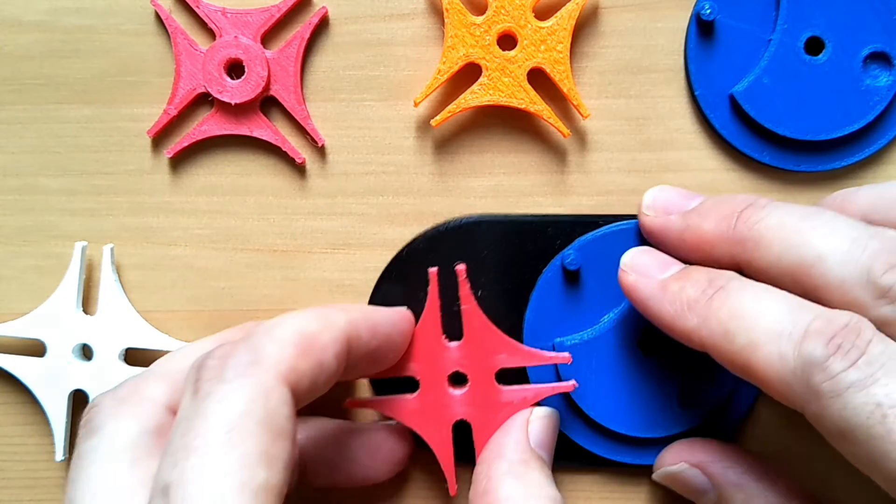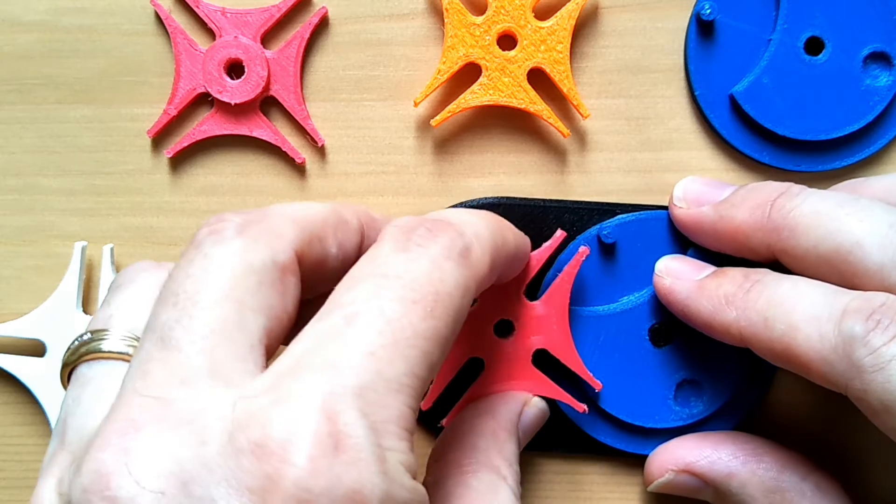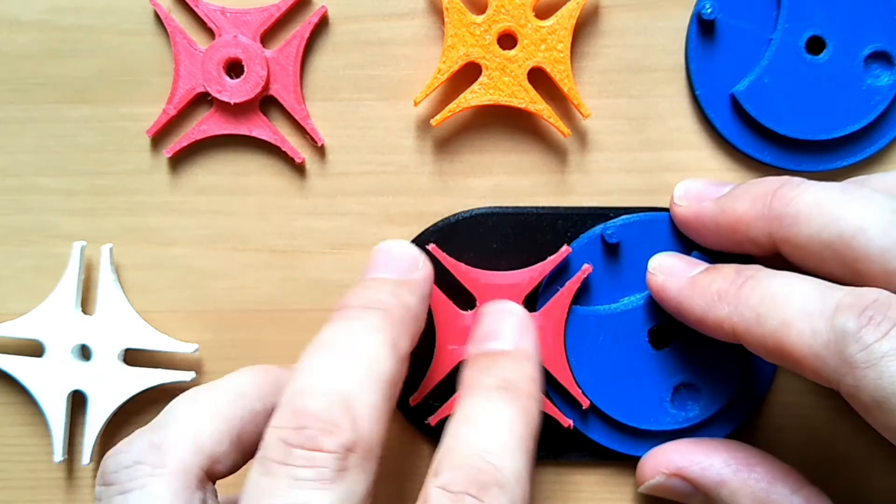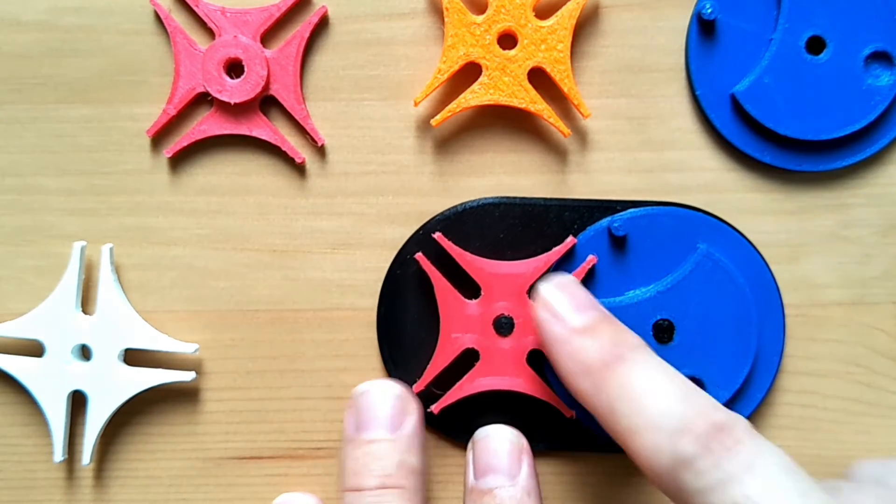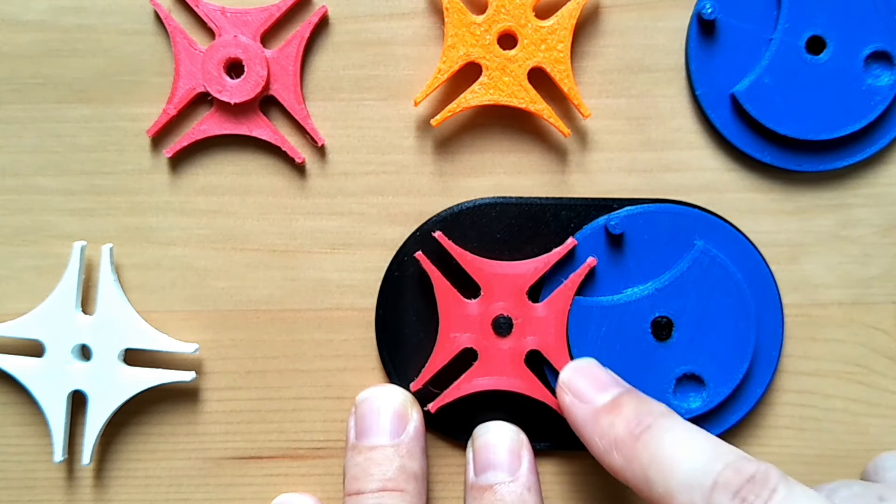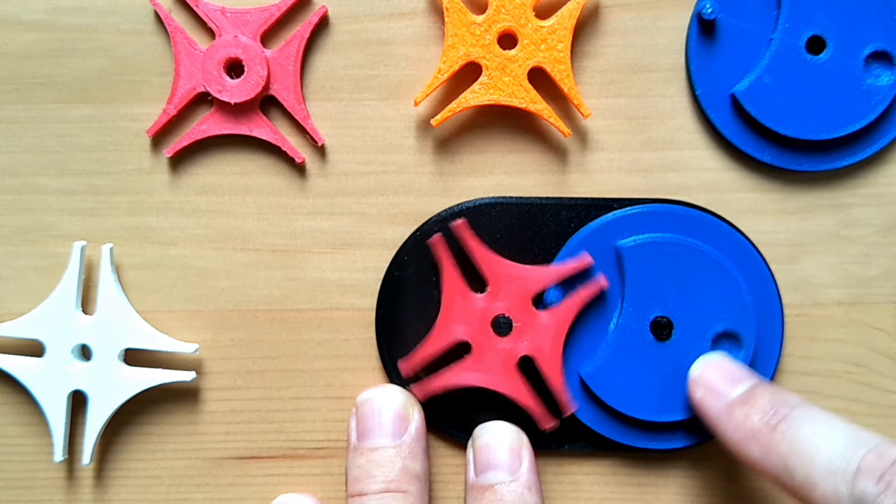Next we have the follower, and again that will slide onto the pin on the other side, so you can see how the follower, the contour of the follower, is following the circle on this part.